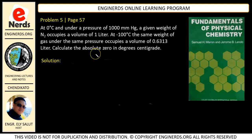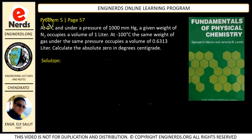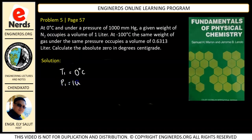This is a simple ideal gas problem. Let me first write down our given values. We have our initial temperature, T1, which is equal to 0 degrees Celsius, under a pressure of 1000 mmHg. The given weight of N2 occupies a volume of 1 liter, so V1 equals 1 liter.